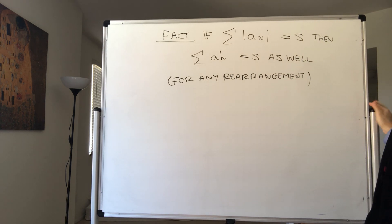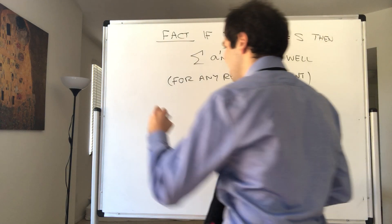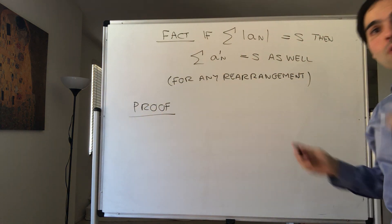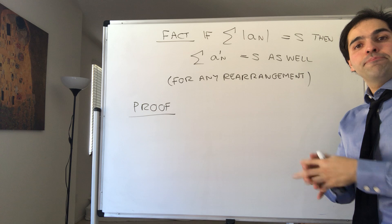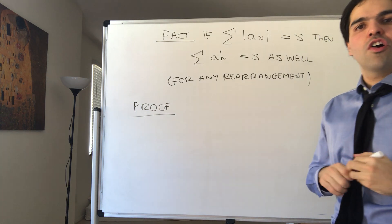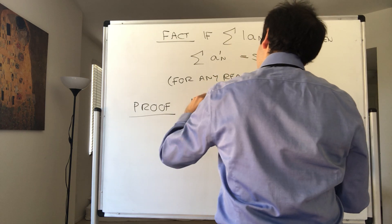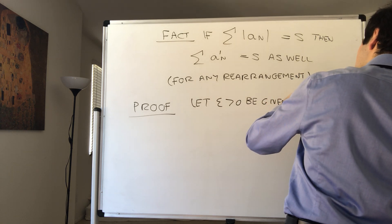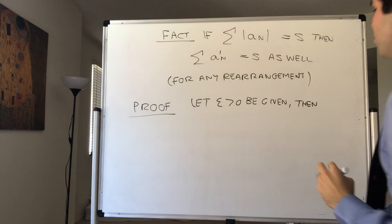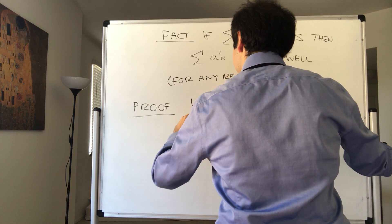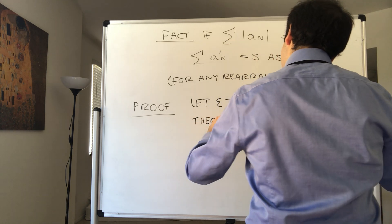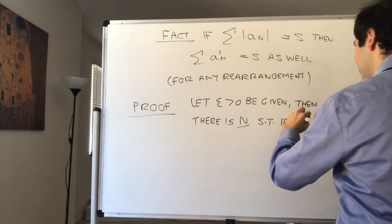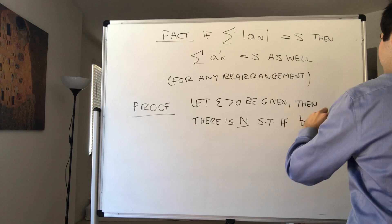Alright, let's prove this. The proof is quite neat. For this we want to use the Cauchy criterion, which says that the tails of the series are arbitrarily small. So let epsilon be given.